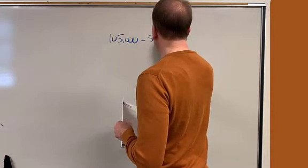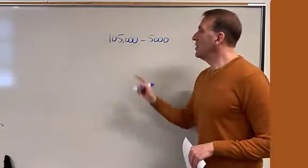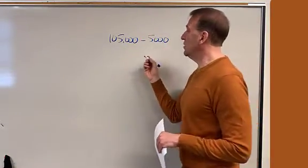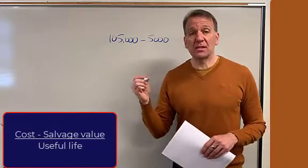And it had a salvage value of $5,000. So the cost minus the salvage value divided by the useful life, that's the formula.